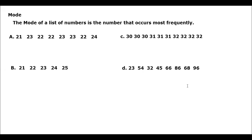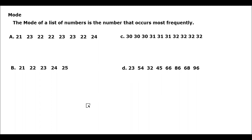Next we have your mode. This is your Math 1, Chapter 4, Measures of Central Tendency. The mode of a list of numbers is the number that occurs most frequently. Take note: the number that occurs most frequently.